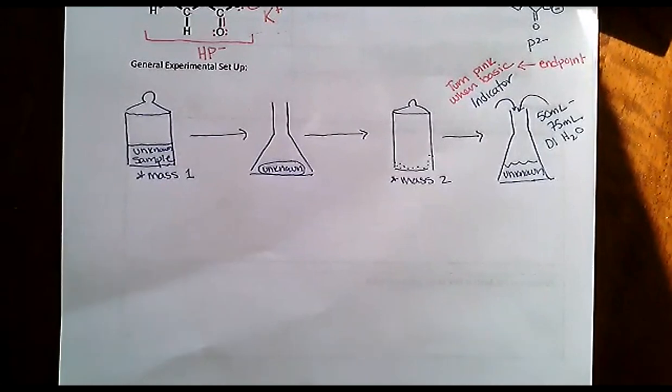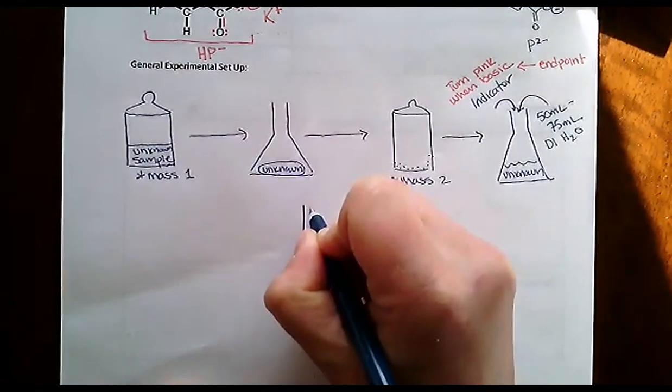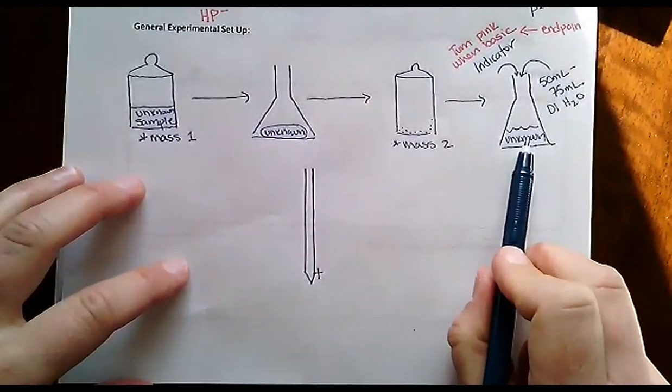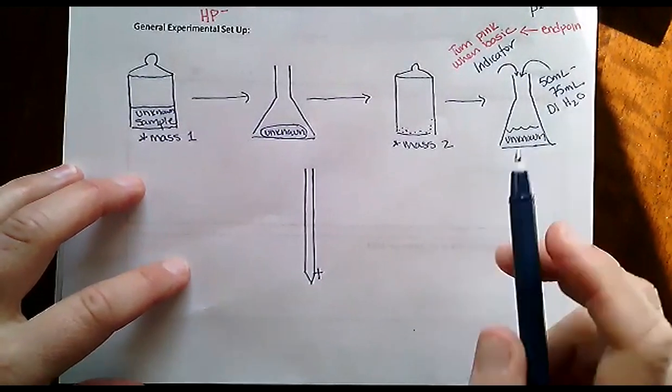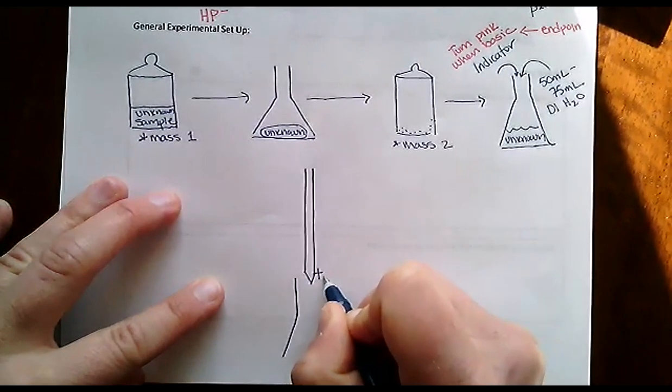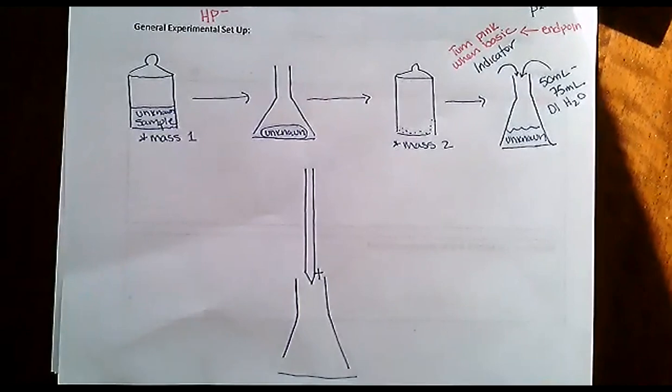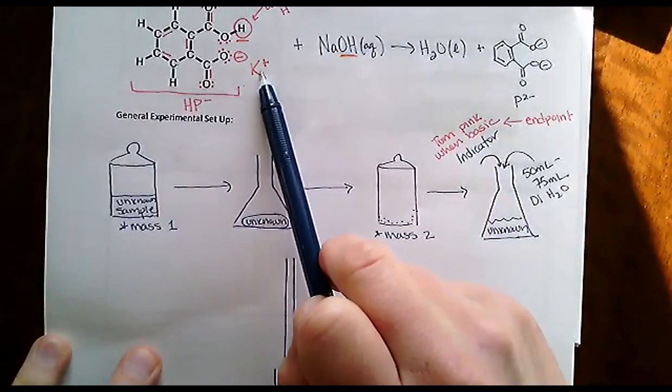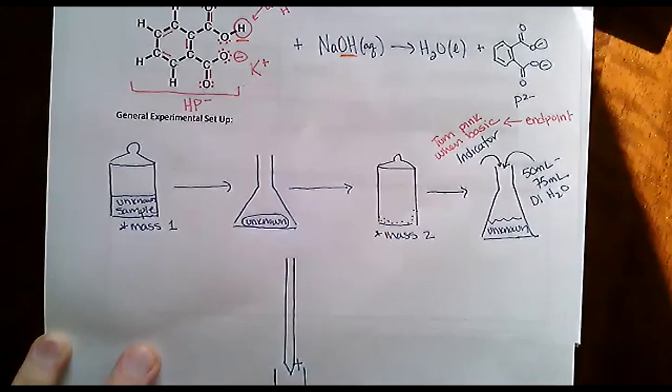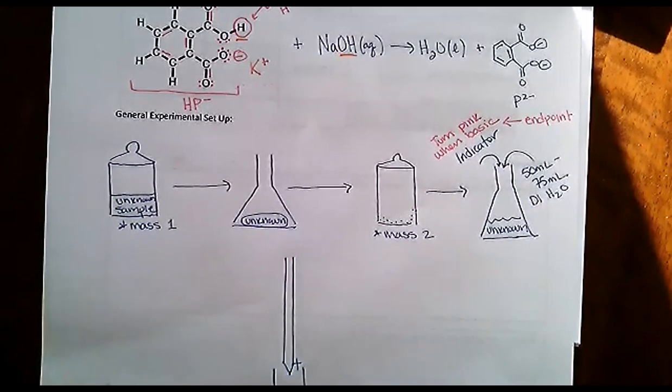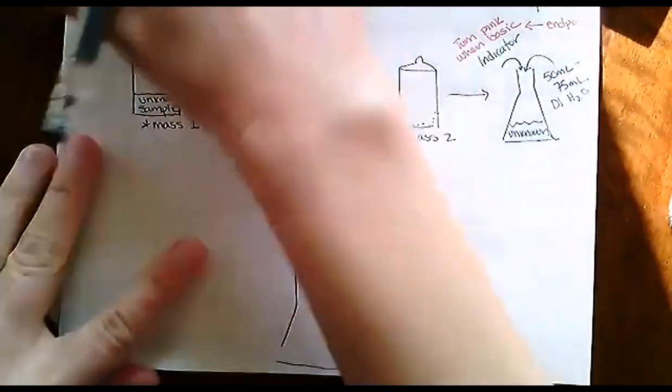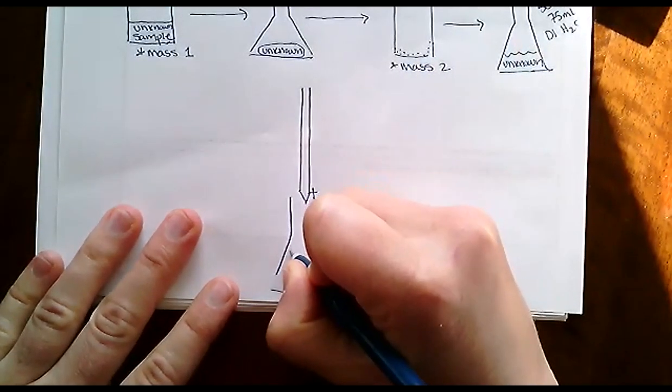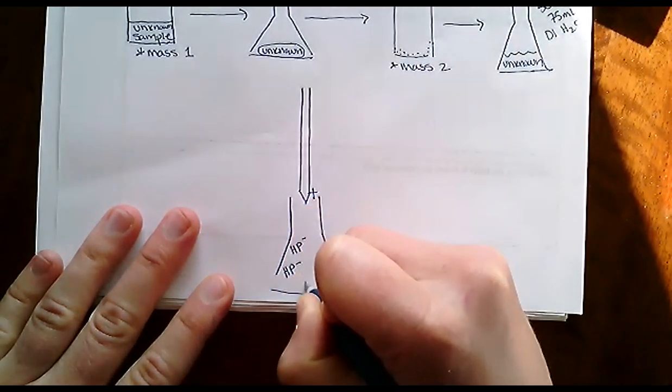The last step is to titrate. You're going to have sodium hydroxide in a burette, and this Erlenmeyer flask with your unknown potassium acid phthalate is going to be right beneath it. Let's think about the molecular view. The acid phthalate is going to dissociate from the K plus. Potassium is just a spectator ion. It's the HP minus that's going to be reacting. There's going to be some number of moles of acid phthalate hanging out in this solution.